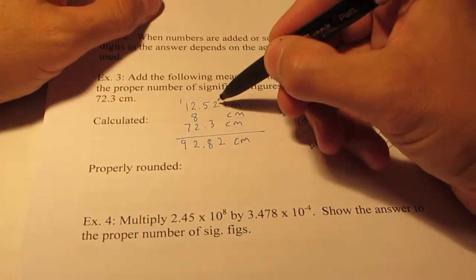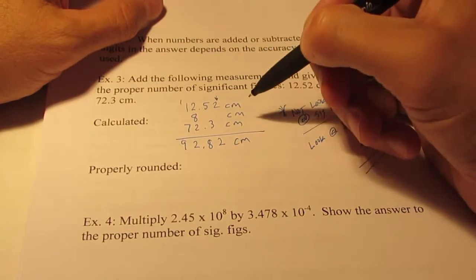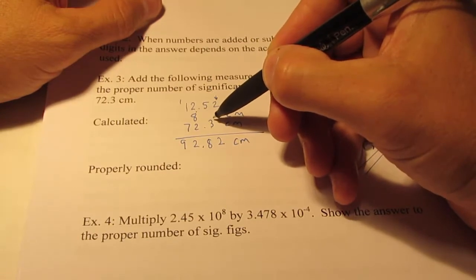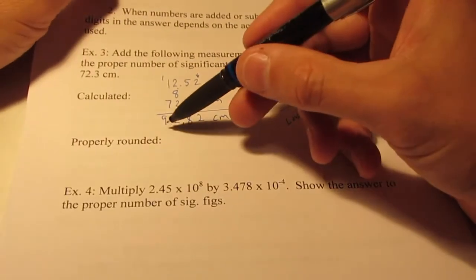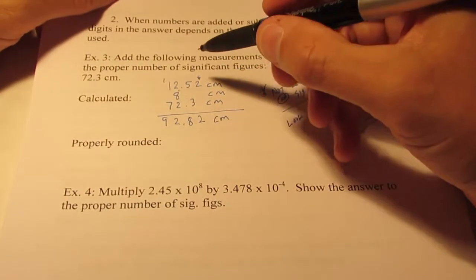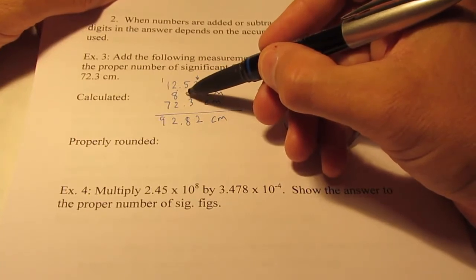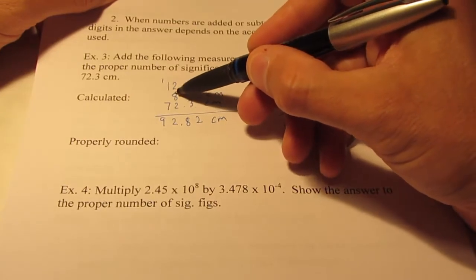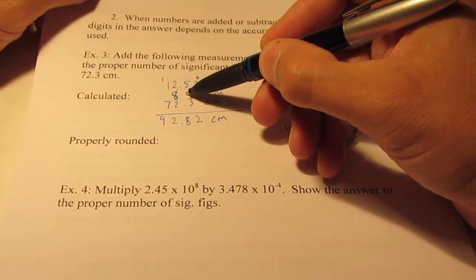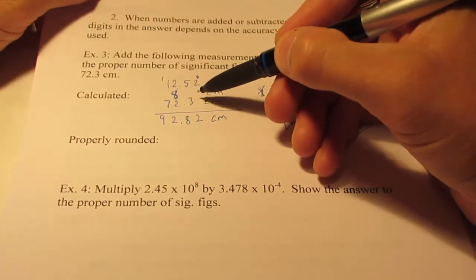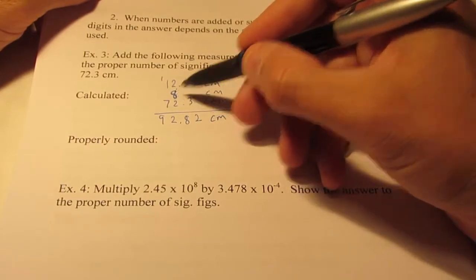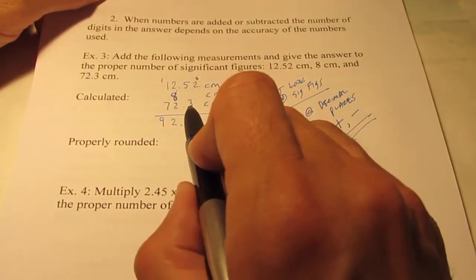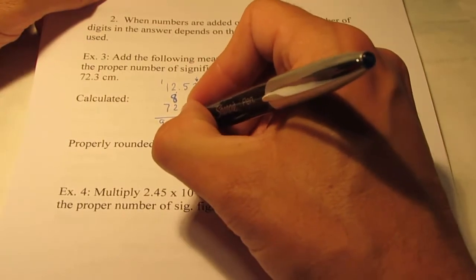Okay, so this measurement here I know to the nearest hundredth. This measurement here I only know to the nearest whole number. This measurement here I only know to the nearest tenth. So how far or where should I round this answer off? Well, what comes after this 8? Do I really know? Could that be a 0? Could it be a 1? Could it be a 3? Maybe that says 7.9. See, I only know this to the nearest whole number. I don't know that it's a 0.00 like my calculator thinks it is. I only know it to the nearest whole number. So the fewest number of decimal places is to the nearest hundredth, the nearest whole number, to the nearest tenth. I have to round this answer off to the nearest whole number.